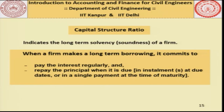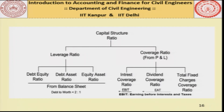We now come to the capital structure ratio, which indicates the long-term solvency or soundness of a company. When a firm makes a long-term borrowing it commits to paying interest regularly and to repaying the principal when it is due — in installments at due dates or in a single payment at maturity. As far as different types of capital structure ratios are concerned, there is the leverage ratio and the coverage ratio, including debt-equity, debt-asset, and equity-asset ratios. The norm is that debt to worth should be less than 2 to 1.